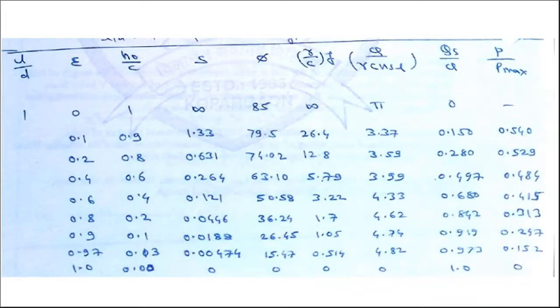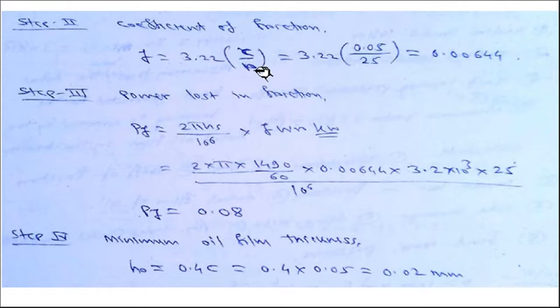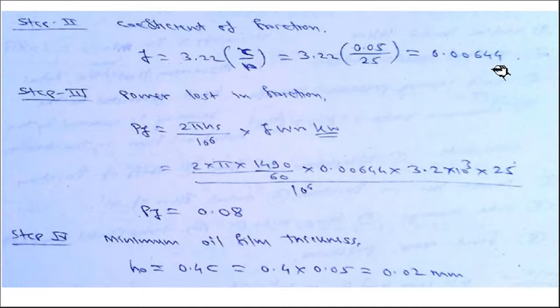The second step is to calculate the coefficient of friction. Since we have the value of r/c × f = 3.22 from the table, the coefficient of friction f = 3.22 × (c/r) = 3.22 × (0.05/25), giving f = 0.00644.